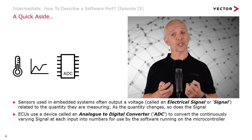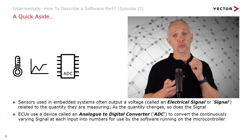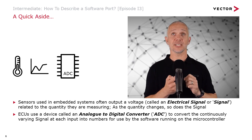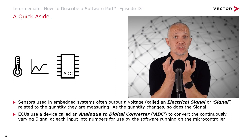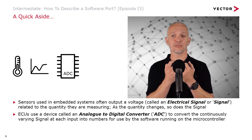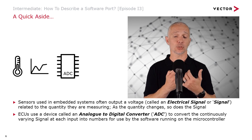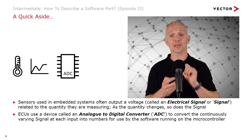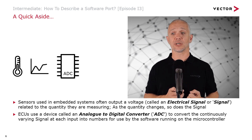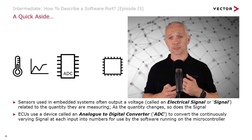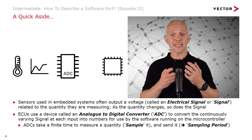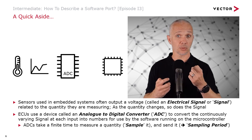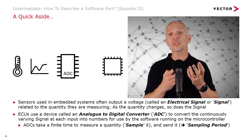ECUs as embedded electronics use a device called an analog to digital converter. We have a continuously varying electrical analog signal, but in our software we need numbers that correspond to that. So we use an analog to digital converter — ADC for short — and it converts that continuously varying signal into numbers for use by the software running on our microcontroller.